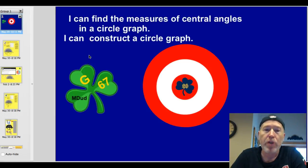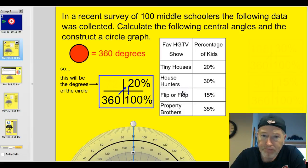Tonight officially we have two targets. I can find the measures of central angles in a circle graph, and I can construct a circle graph. Let's do it a thing. All right, in a recent survey of 100 middle schoolers, the following data was collected. Calculate the following central angles and construct a circle graph.